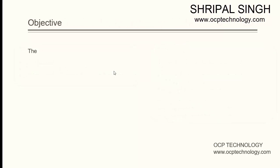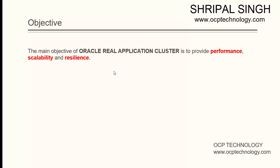What is the objective of the RAC configuration? The main objective of Real Application Clusters is to provide performance, scalability, and resilience. These three are the main objectives of Oracle RAC.